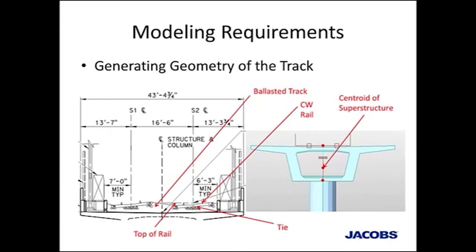Let's look at what a high-speed rail bridge cross section looks like. This is a ballasted bridge, but you can imagine a direct fixation cross section with pedestals instead of ballast. The goal in the model is to accurately capture this cross section, including the real location of the rails relative to the superstructure centroid. Now I want to point out the continuously welded rail. For these trains to run smoothly over long distances, we want to avoid using rail expansion joints as much as possible. This introduces a few issues, like finding a thermal origin, but we have ways of getting around that in modeling.